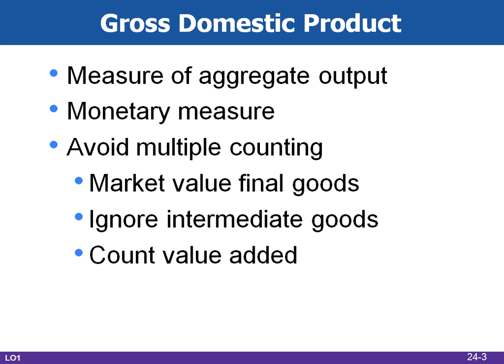To avoid multiple counting of goods, GDP includes only the market value of final goods and ignores intermediate goods, which are goods either purchased for resale or for further processing into those final goods. GDP could also avoid multiple counting by counting only the value added at each stage. Value added is the market value of a firm's output less the value of the inputs that the firm purchased from others.